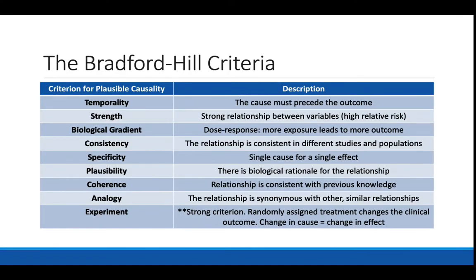So how can we establish if we have a causal relationship? For example, how do we know whether cigarette smoking truly causes COPD, or whether high blood pressure causes strokes and heart attacks? We saw last week that many variables can be positively correlated, but that doesn't mean they represent a causal relationship. The truth is it's very difficult to establish causality, but there are criteria that can help us determine whether a relationship is causal.